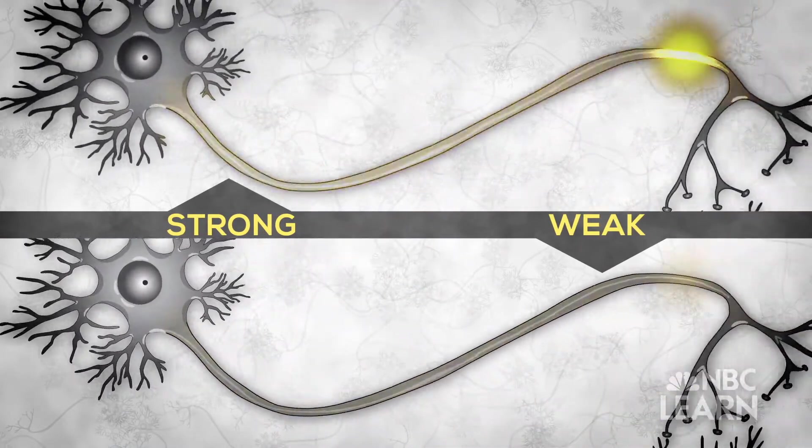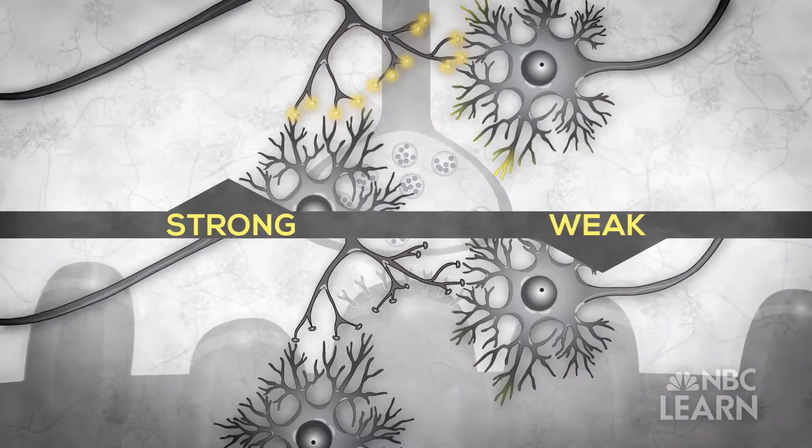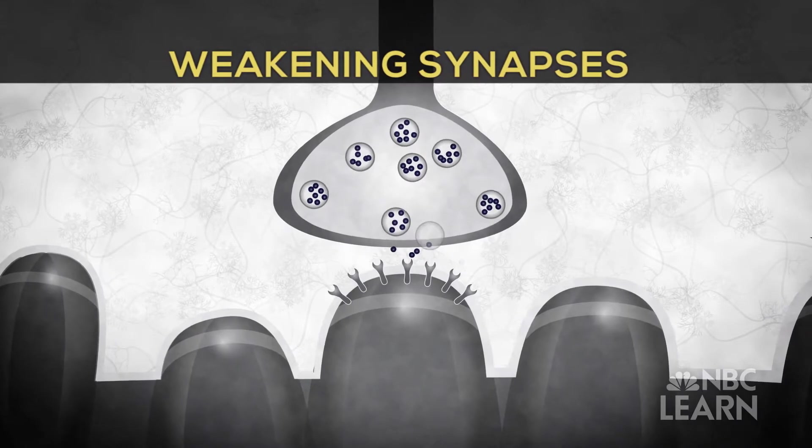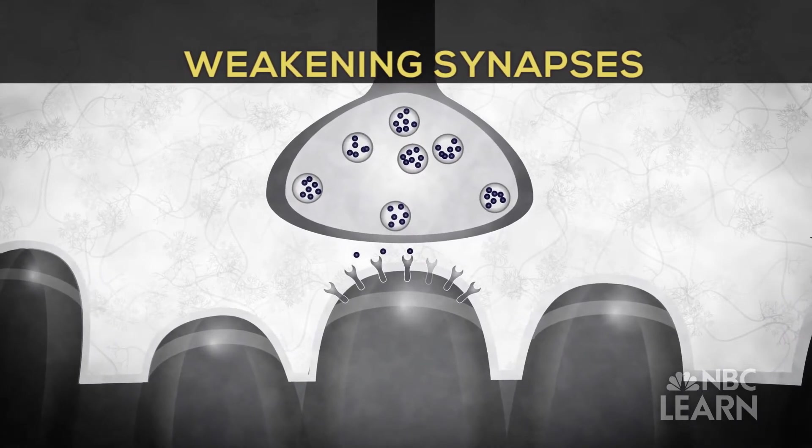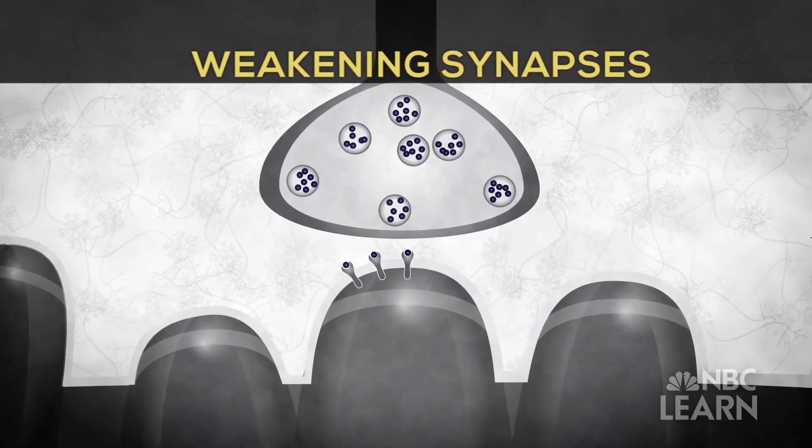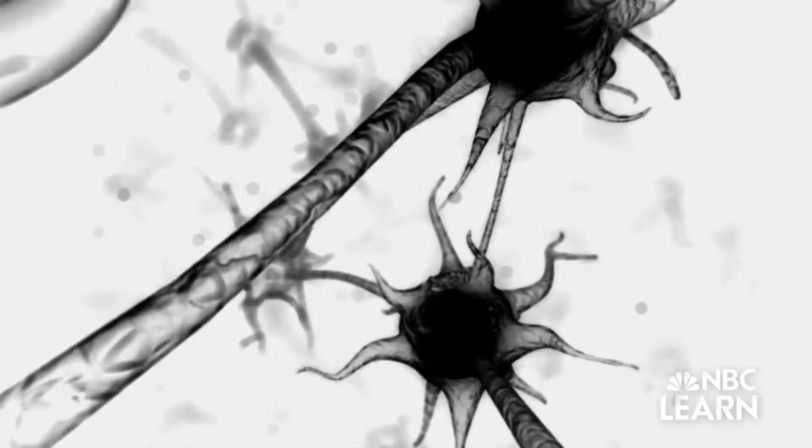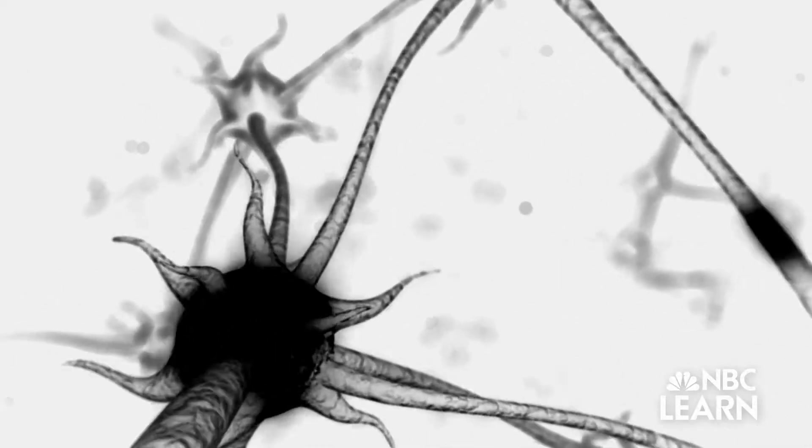Depending on how often the synapse is used, communication between neurons is altered by changes in the amount of neurotransmitter released, the number and sensitivity of the neural receptors, and the number and shape of dendritic spines. This means that the brain is continually building, pruning, and reshaping the network of neurons. In his lab, Lynch demonstrates this.